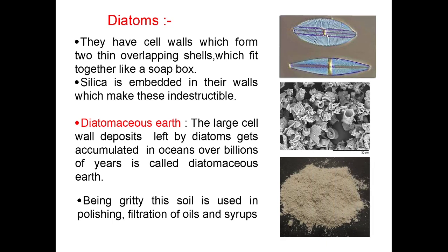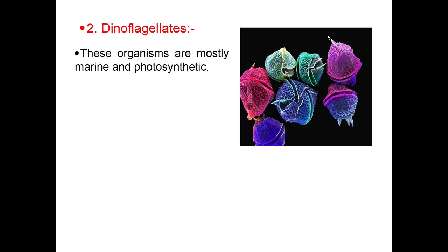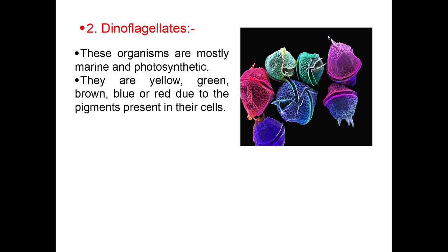The large cell wall deposits left by diatoms, accumulated in oceans over billions of years, are called diatomaceous earth. Being gritty, this soil is used in polishing and filtration of oils and syrups. Dinoflagellates are mostly marine and photosynthetic. They are yellow, green, brown, blue, or red due to the pigments present in their cells.